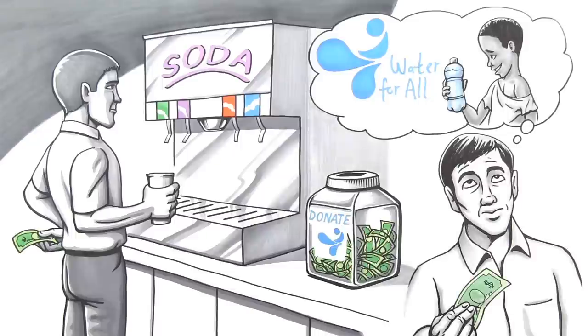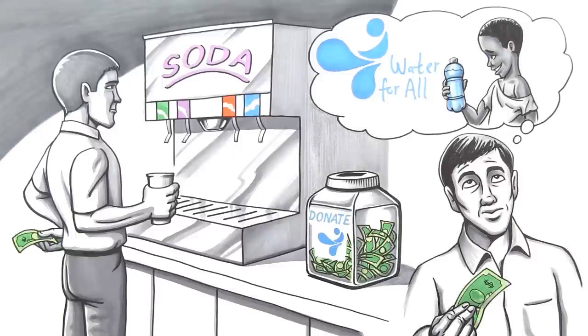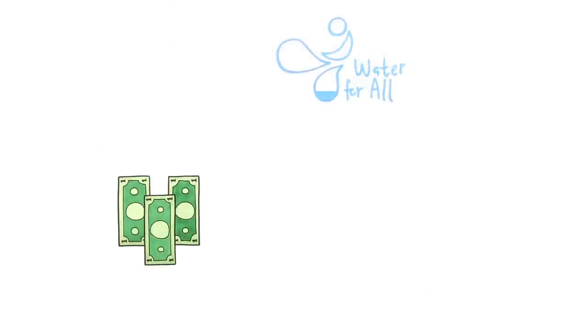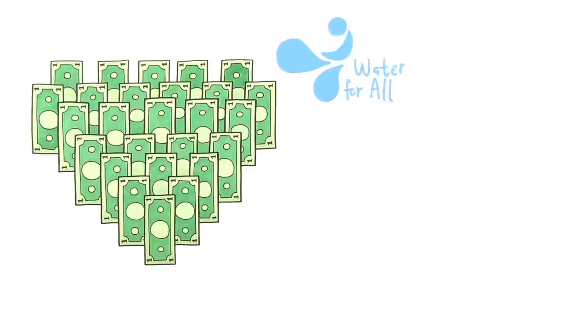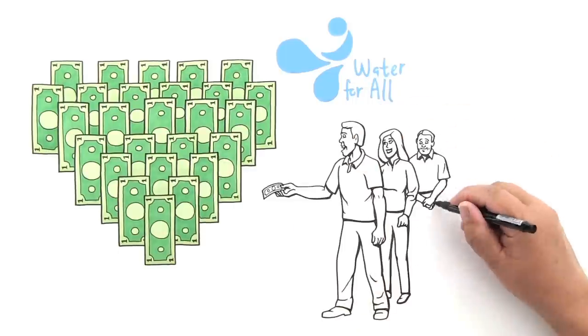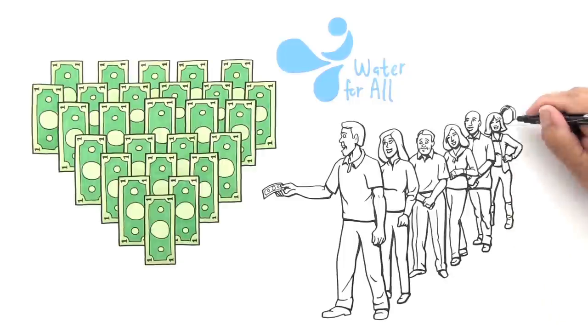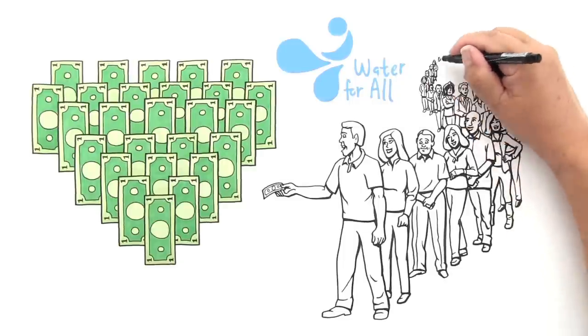See, for every dollar you donate, Atlas Copco donates two. One dollar becomes three. Ten becomes thirty. Four thousand becomes twelve thousand. And Atlas Copco USA has already donated over three hundred thousand dollars to clean water projects.